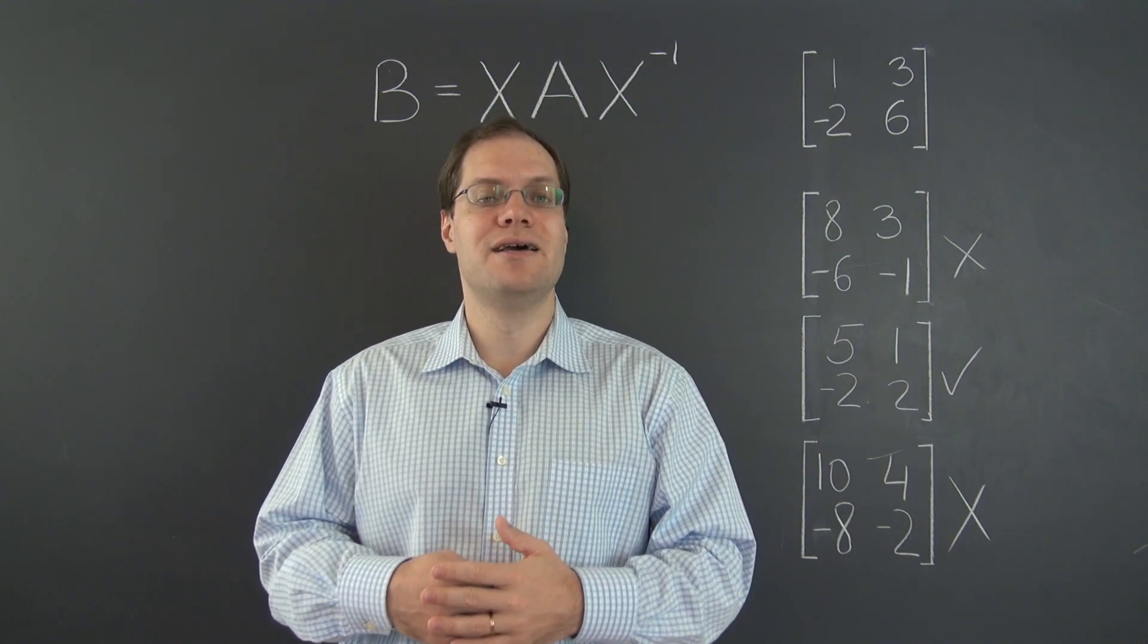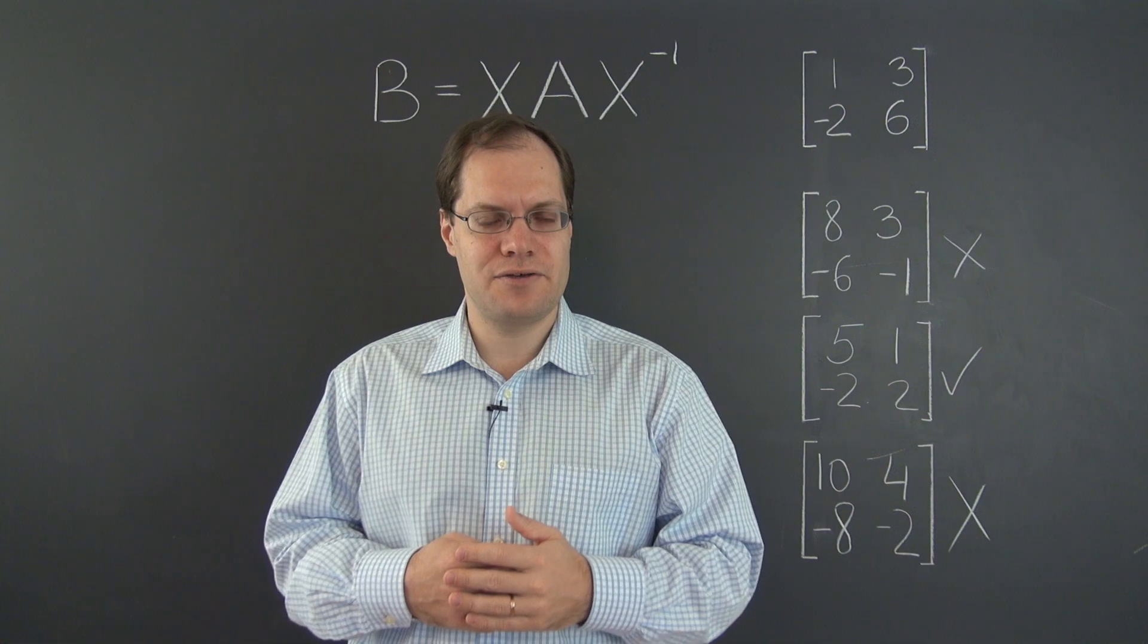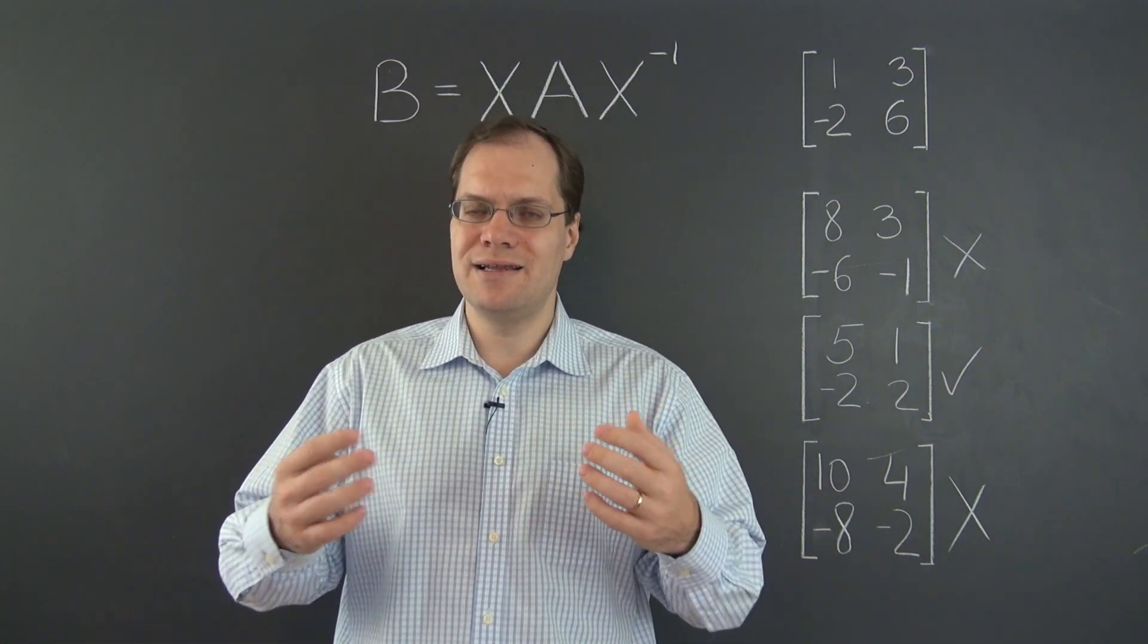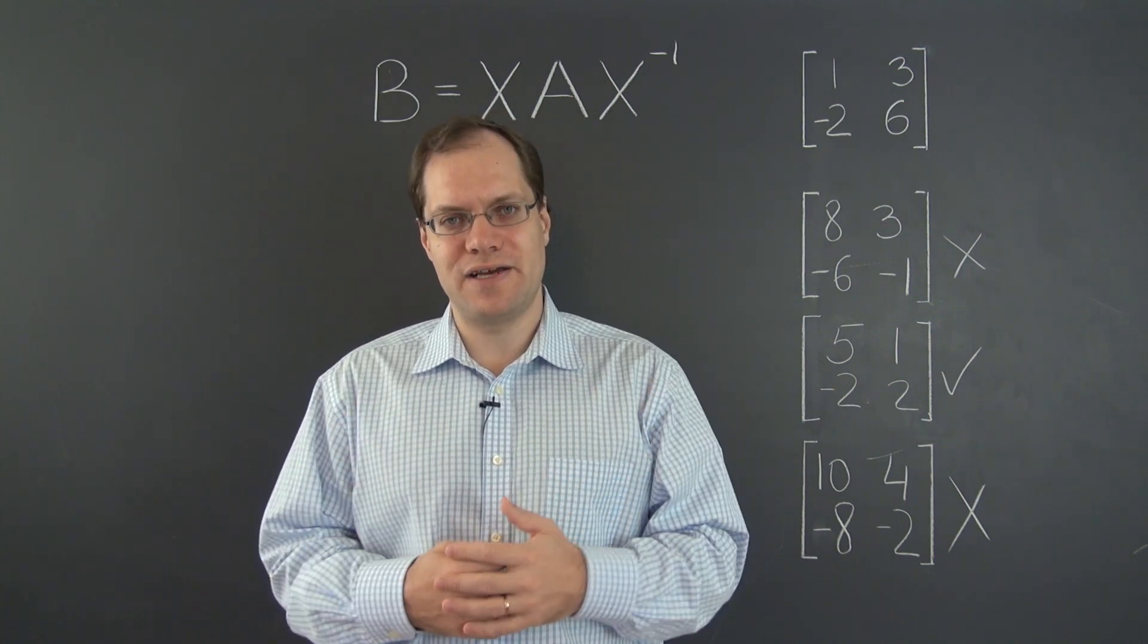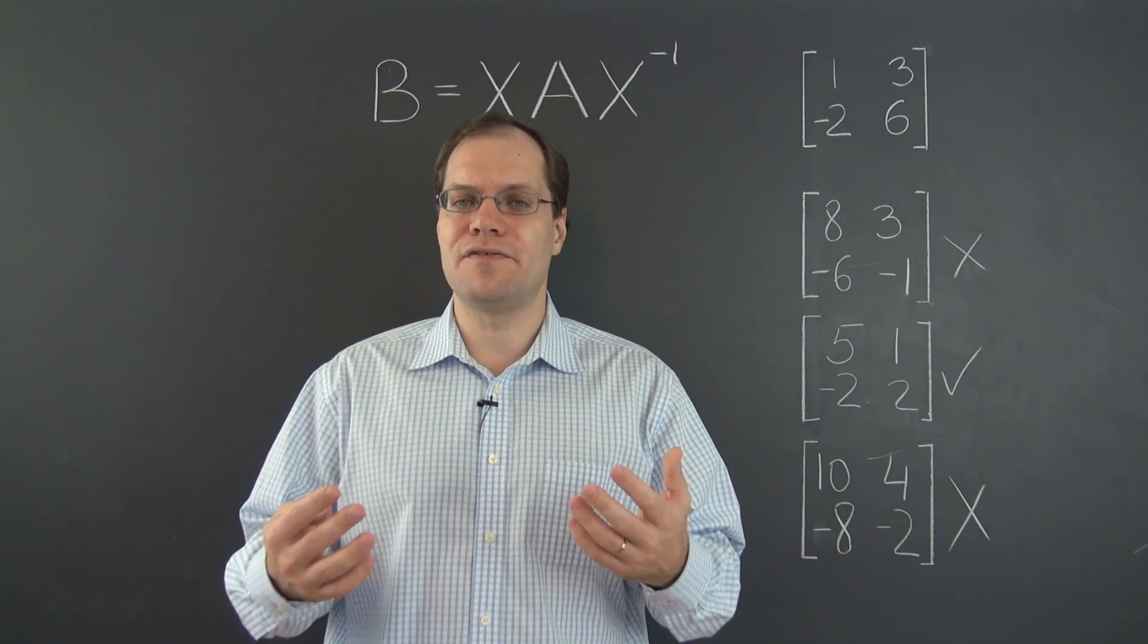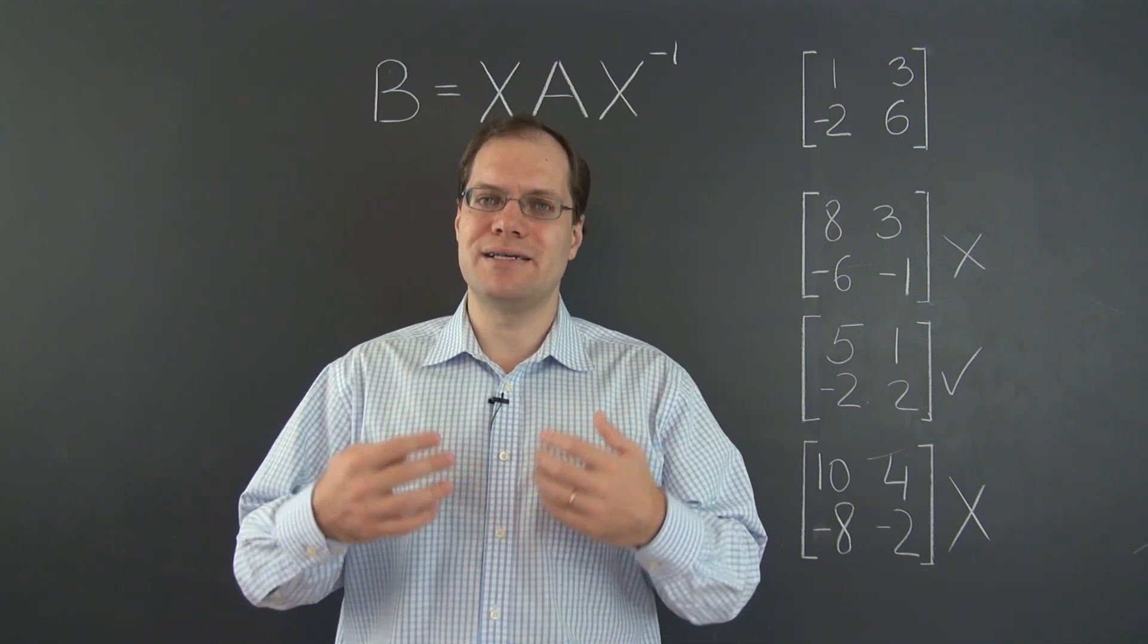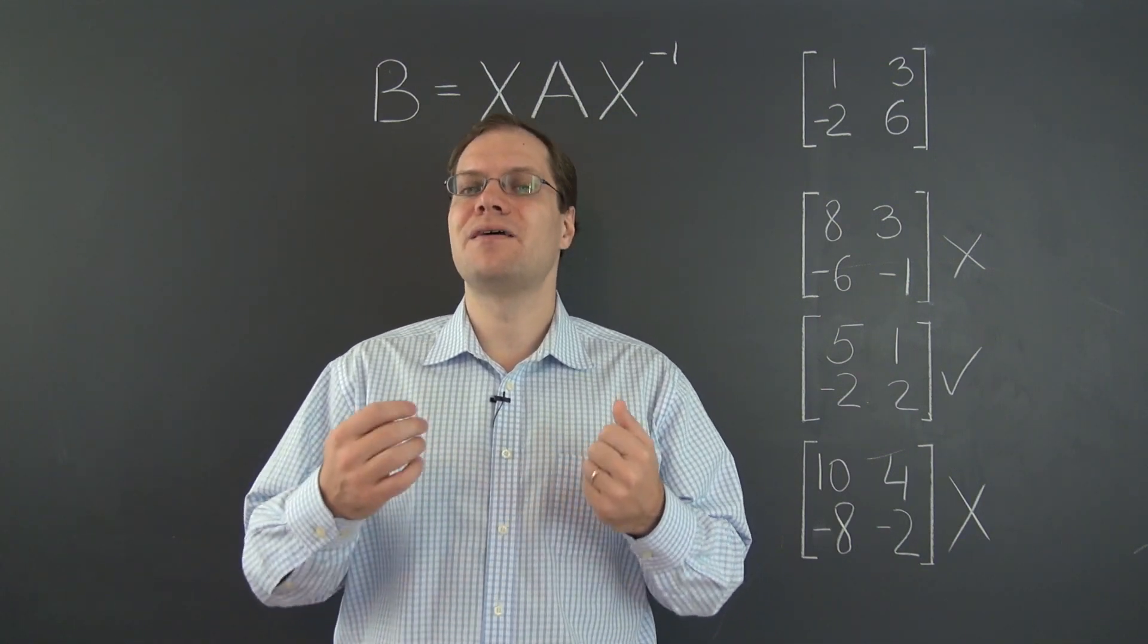That I would call those matrices as having identical eigenvalues. And they both need to have three, or in general, n linearly independent eigenvectors. Is that enough for those two matrices to be related by a similarity transformation? Think about it.